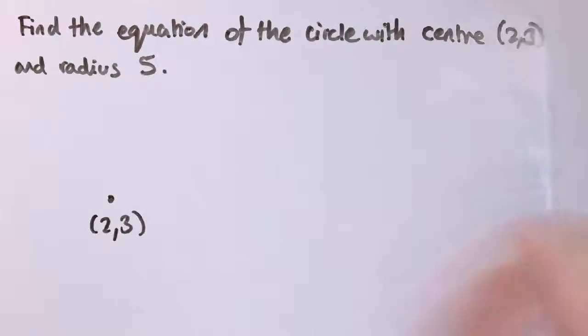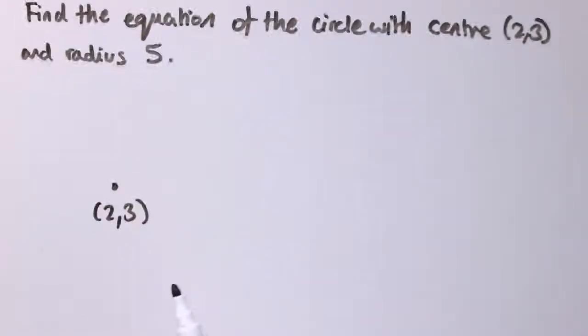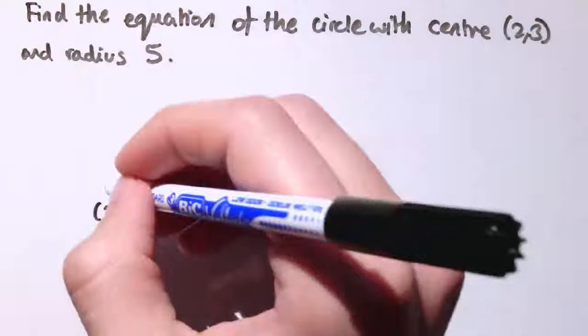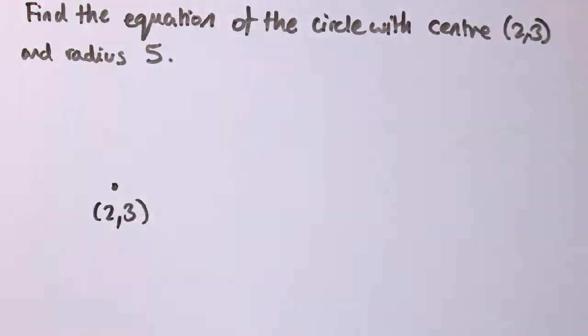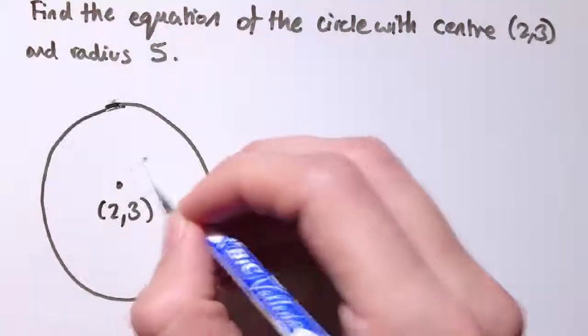I want a circle through 2, 3 with radius 5. So it's going to be in 2, 3 and then it's going to have radius 5. Not a perfect circle, but that'll do.